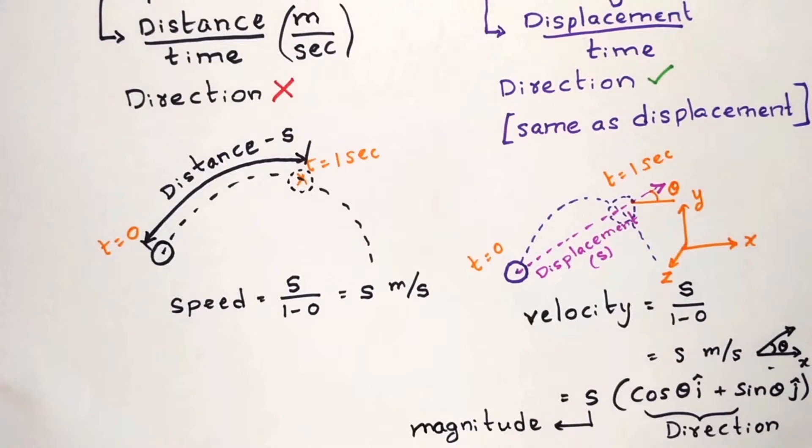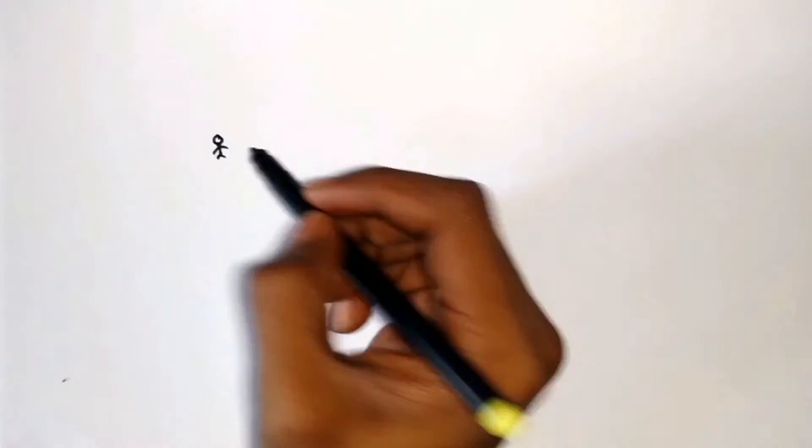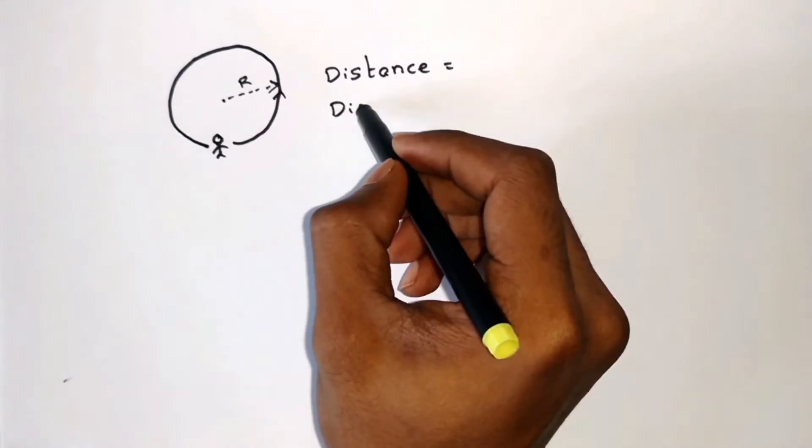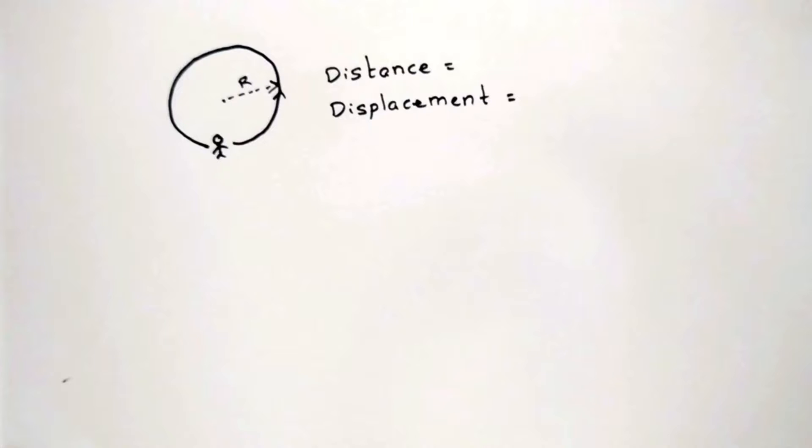Now here comes the question for you: if a person has walked along a circle of radius r and reached the same initial position, then what is the displacement and distance covered by the person? Just pause the video and try.